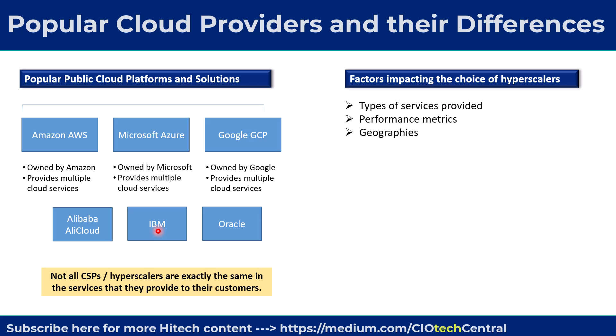Another key consideration is the geographies where the CSP operates and has data centers. For example, anyone deciding on a particular CSP will need to check the proximity of the data center to ensure that their specific applications can be accessed easily by themselves and their customers.